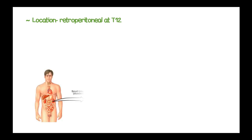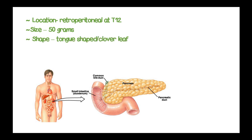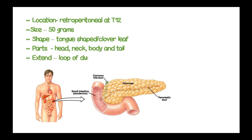The pancreas is located in a retroperitoneal position at the level of T12. Its size is normally 50 grams in an adult, and the shape is tongue-shaped or clover-leaf-shaped. It has a head, neck, body, and a tail. It extends from the loop of the duodenum up to the hilum of the spleen.